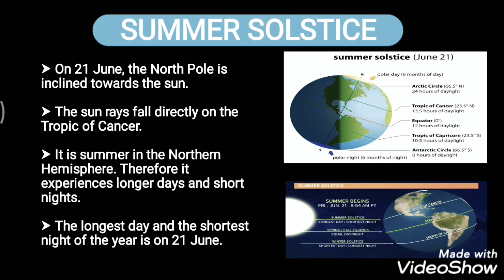On 21st of June, the North Pole is inclined towards the Sun. Because of this, the Sun rays fall directly on the Tropic of Cancer, which is present in the northern hemisphere. Since the North Pole is inclined towards the Sun, it is summertime in the northern hemisphere.